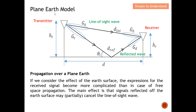Let's quickly understand what the plane earth model is and when we can apply it. When the EM wave propagates over a plane earth, if we consider the effect of the earth's surface, the expressions for the received signal become more complicated than in the case of free space propagation. The main effect is that the signal reflected off the earth's surface may partially or totally cancel the line-of-sight wave.